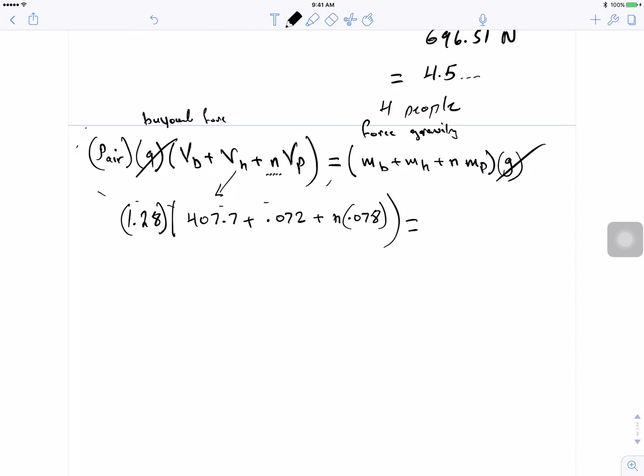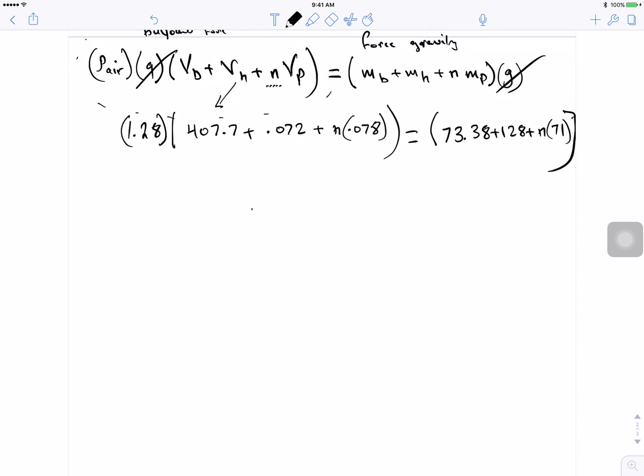Then we close this and then we add the masses: 73.38 plus 128 plus n times 71. And then you just solve for n. And n for me I got at the end 319.62 equal to 70.9n, and then n I got 4.5, which is the same thing. So n is equal to 4, 4 people. But this is kind of like the right approach for this problem.